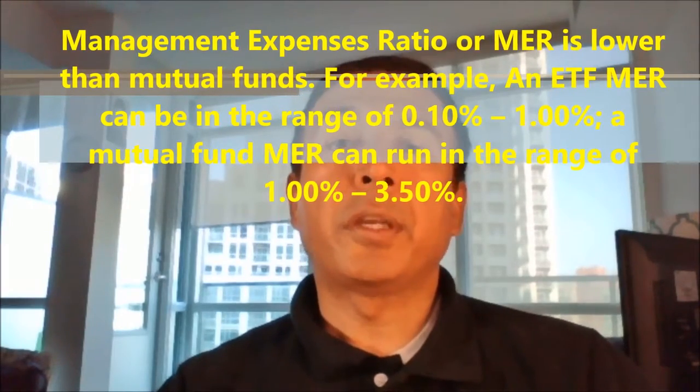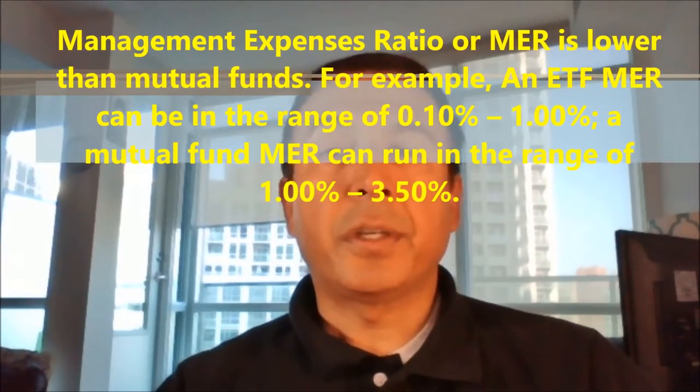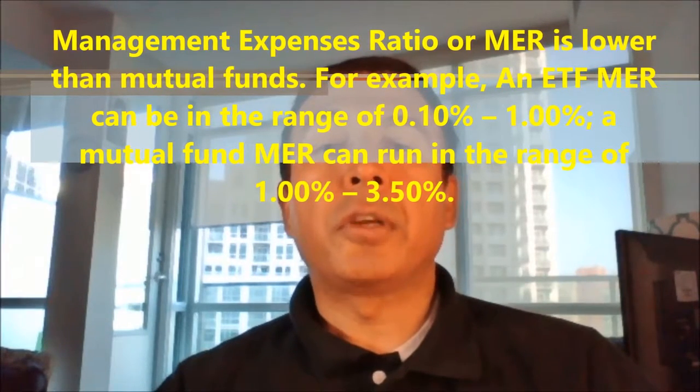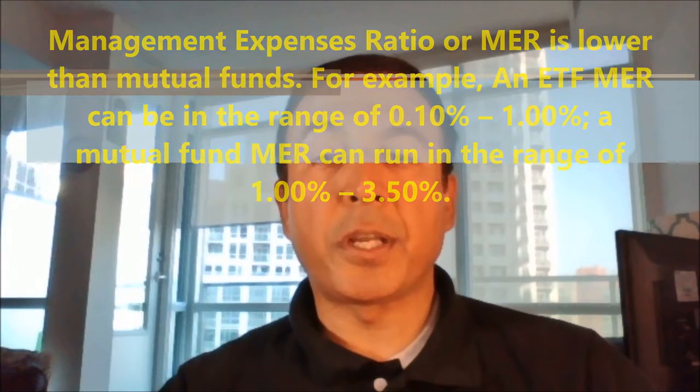Advantages of ETFs. Lower Cost: The ongoing cost of holding ETFs, called Management Expense Ratio or MER, is lower than mutual funds or index funds. For example, an ETF MER can be in the range of 0.25% to 1%, or even as low as 0.10%. However, a mutual fund MER can cost in the range of 1% to 3%.